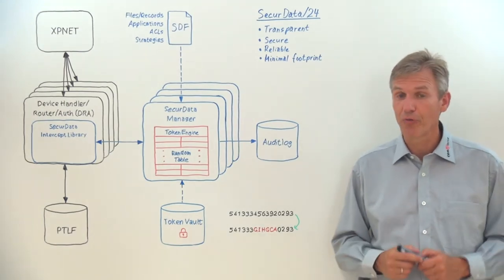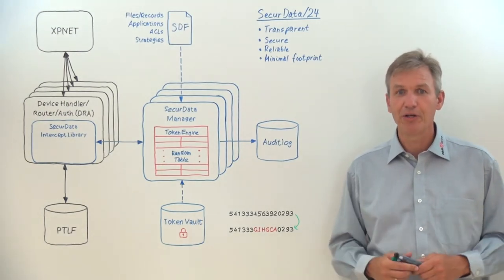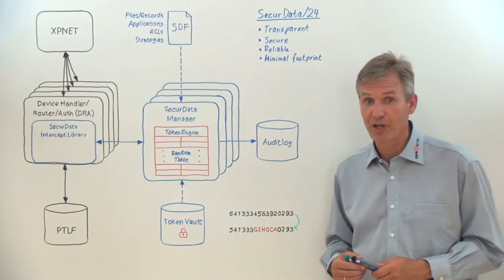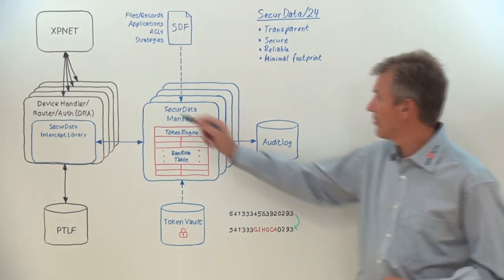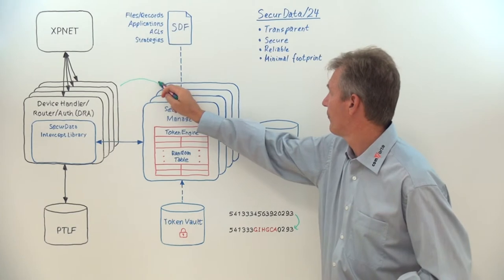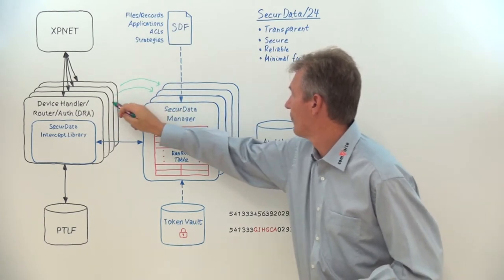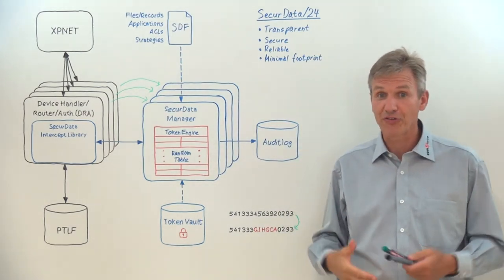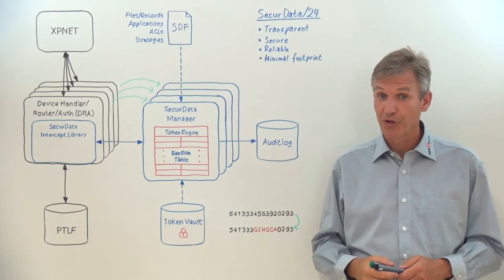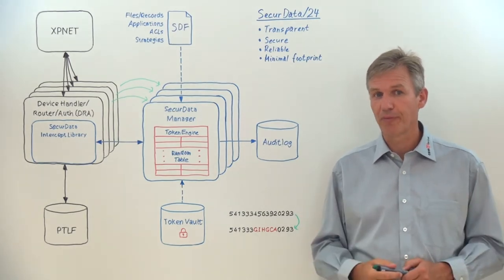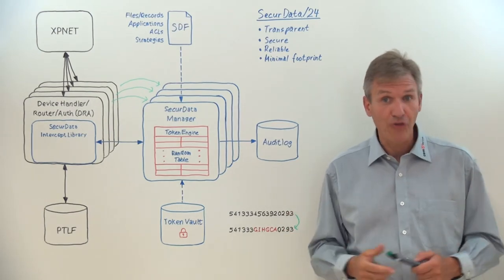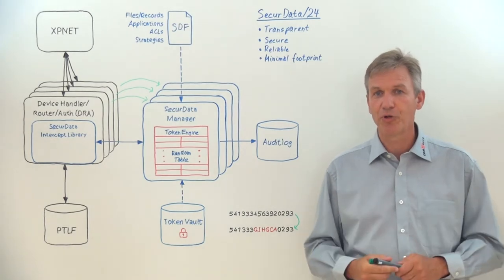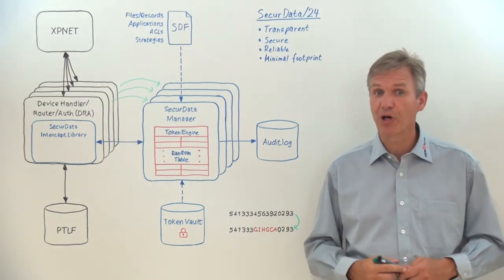Now, what about scalability and fault tolerance? Typically, one SecureData manager is run in each CPU. The intercepted processes will establish a link to the managers in its CPU. So, as Base24 processes are scaled across the CPUs, the tokenization load will be distributed accordingly. And should a link be lost, the intercept library will automatically switch to a manager in another CPU until the manager in the same CPU becomes available again.